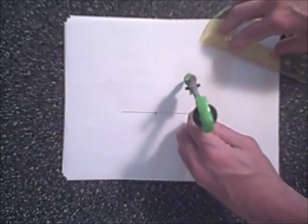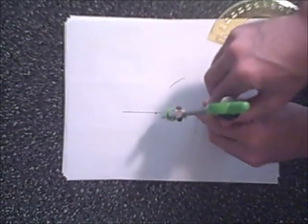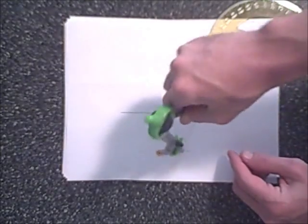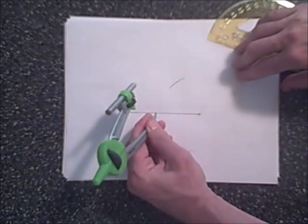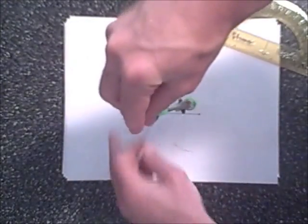We start at one endpoint, we draw an arc above it and an arc below it. And then from the other endpoint, we draw an arc above it and an arc below it.